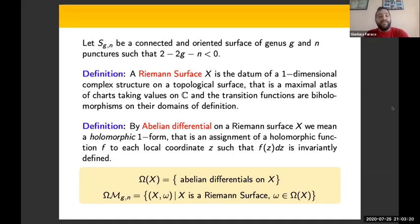As the name suggests, a Riemann surface is the datum of a one-dimensional complex structure on a topological surface. So we have charts taking values on C and the transition functions are biholomorphisms on their domains of definition. By abelian differential on a Riemann surface we mean a holomorphic one-form, that is an assignment of holomorphic functions to each local coordinate z such that f(z) dz is invariantly defined.